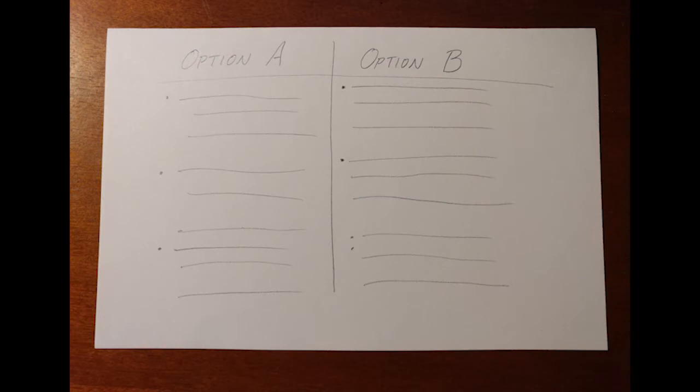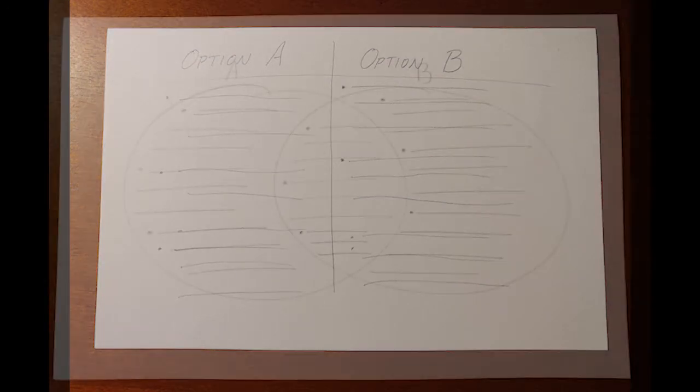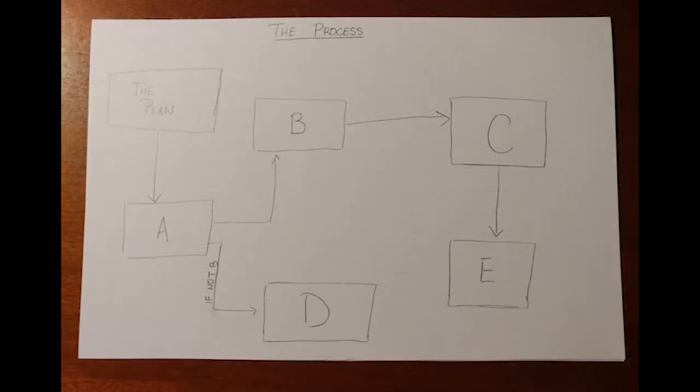T-charts and Venn diagrams can be powerful tools if you have to compare two choices or explain similar concepts. They can also double as notes for you while you present. Use flowcharts to show progression or steps in a plan — they are especially helpful if you are presenting multiple pathways, as they can show branching paths and contingency plans.